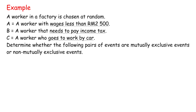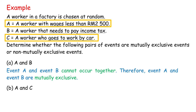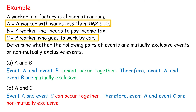Example: A worker in a factory is chosen at random. Given A equals a worker with wages less than RM2500, B equals a worker that needs to pay income tax, C equals a worker who goes to work by car. Determine whether the following pairs of events are mutually exclusive or non-mutually exclusive. A and B: Event A and event B cannot occur together, therefore event A and event B are mutually exclusive. A and C: Event A and event C can occur together, therefore event A and event C are non-mutually exclusive.